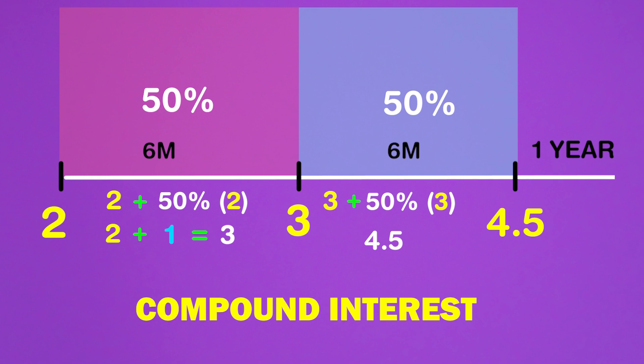Compounding simply means earning interest on interest. This is better than doubling every single year. Let's make an effort to go even further.